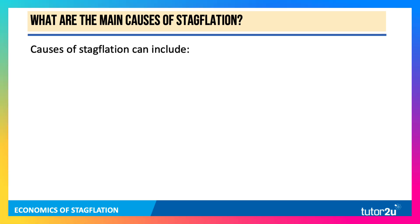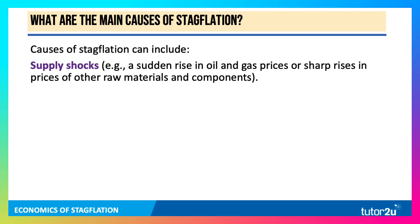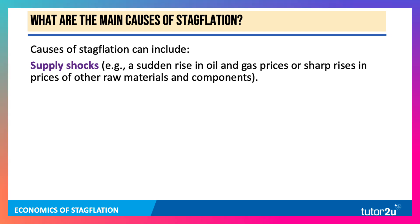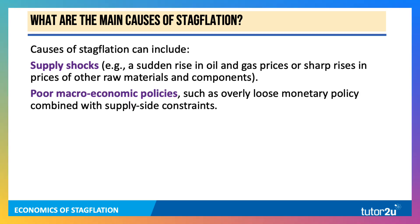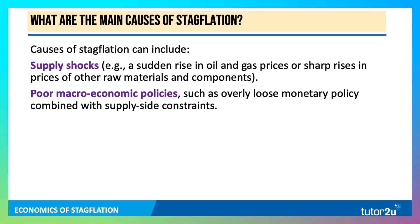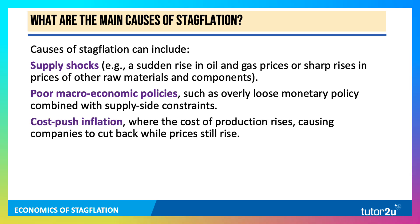The main causes include supply shocks — the sudden rise in oil and gas, or a big rise in the price of other key raw materials and components such as copper or cocoa. Often poor macro policies make things worse, maybe keeping interest rates too low for too long. An overly loose monetary policy can cause some demand-pull inflation, allied to a lack of supply-side productive capacity.